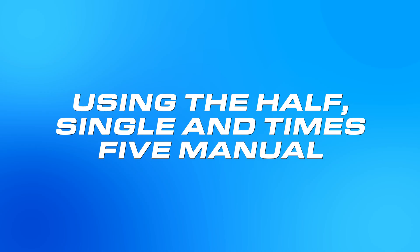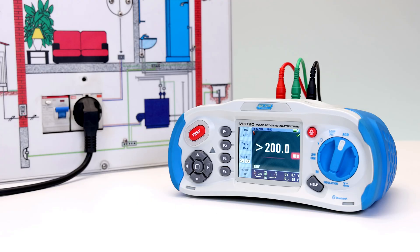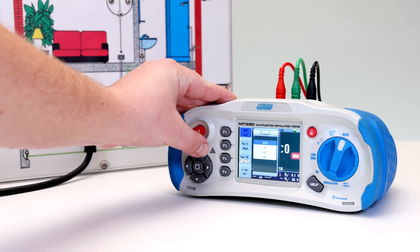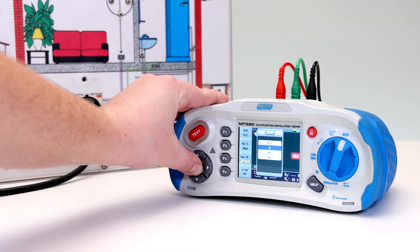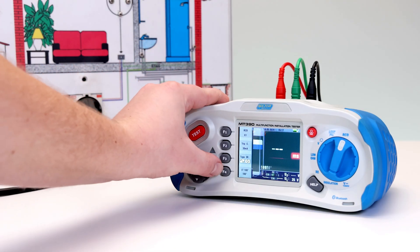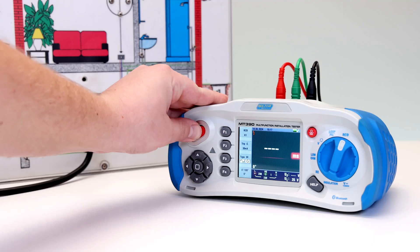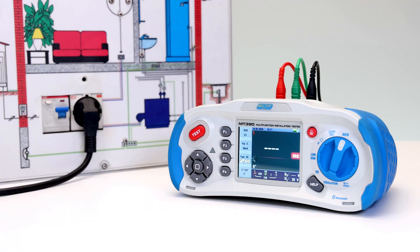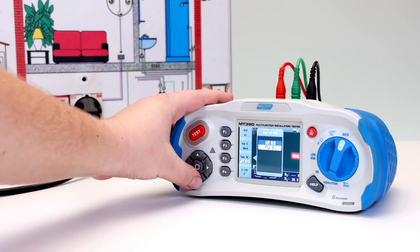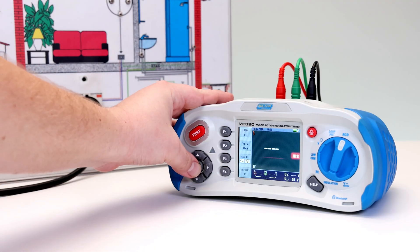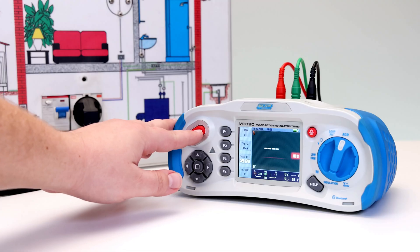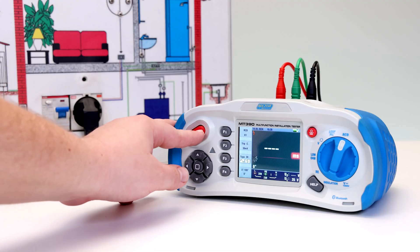Using the half, single and times five manual selection, press F1 and use the arrow keys to navigate to the half, single and five times option. Using the F2 and F3 buttons, select the RCD's trip current and type of the RCD, general or selective.